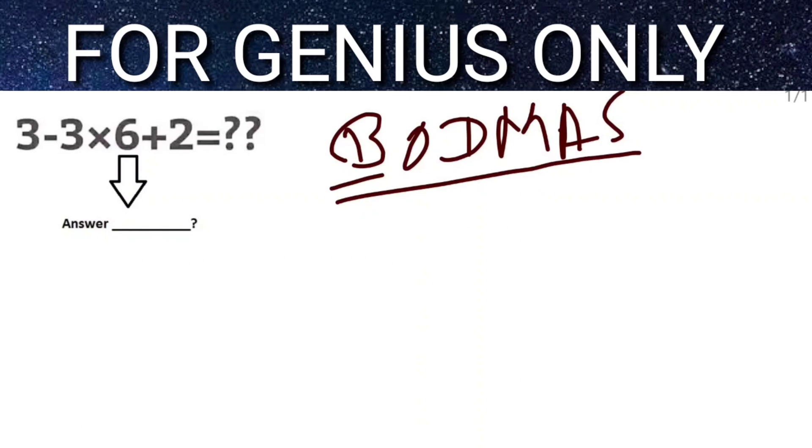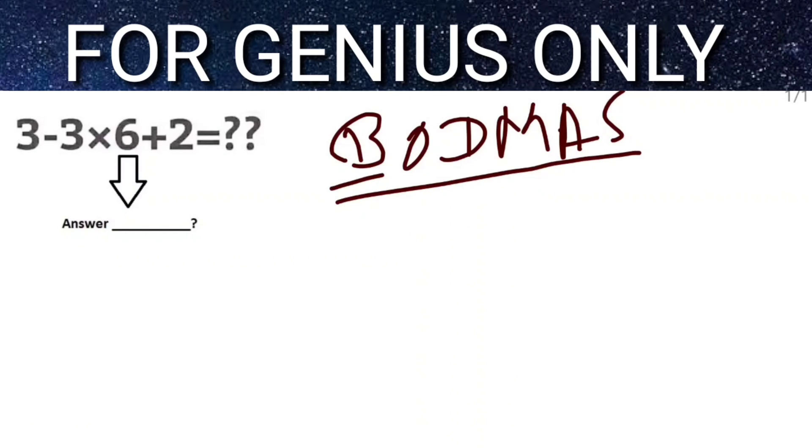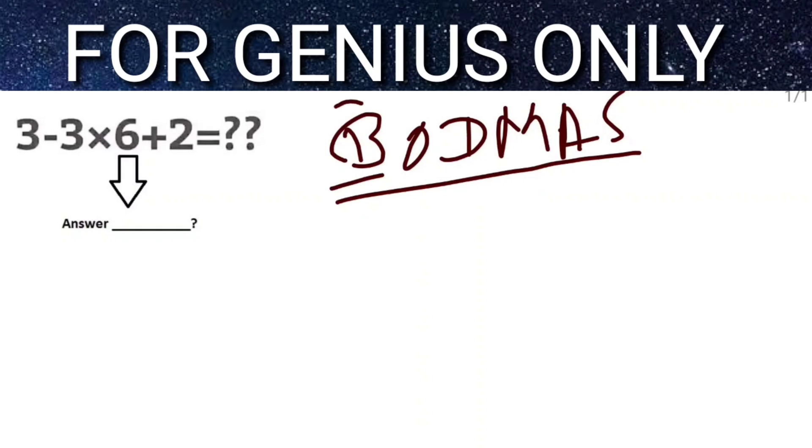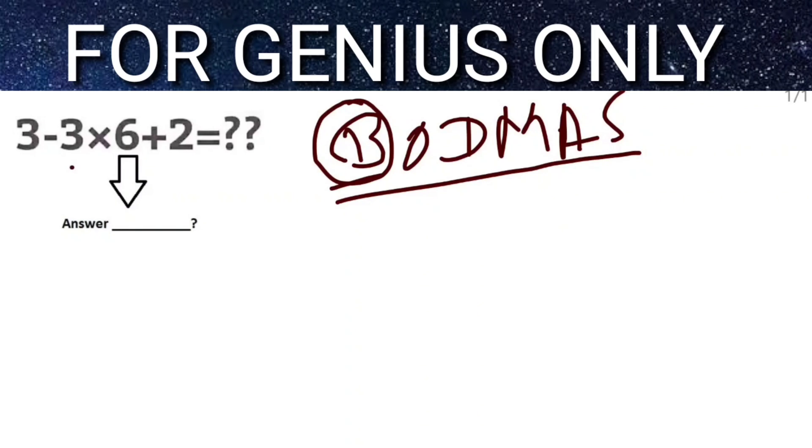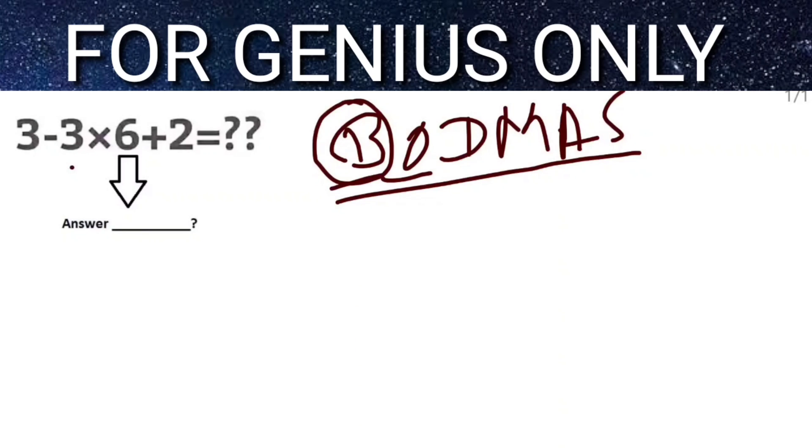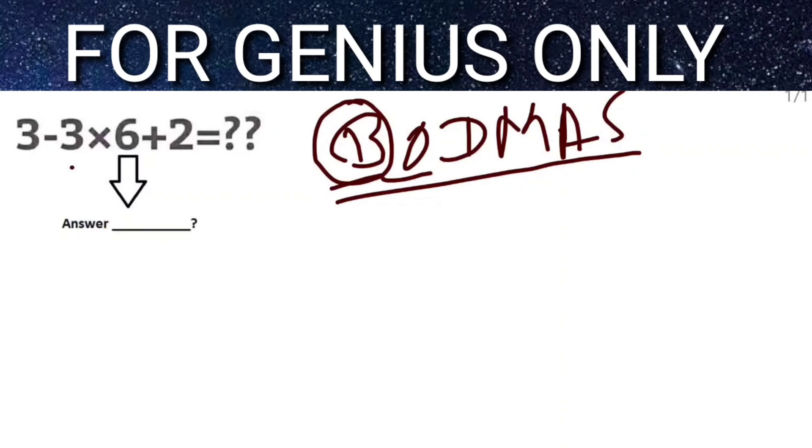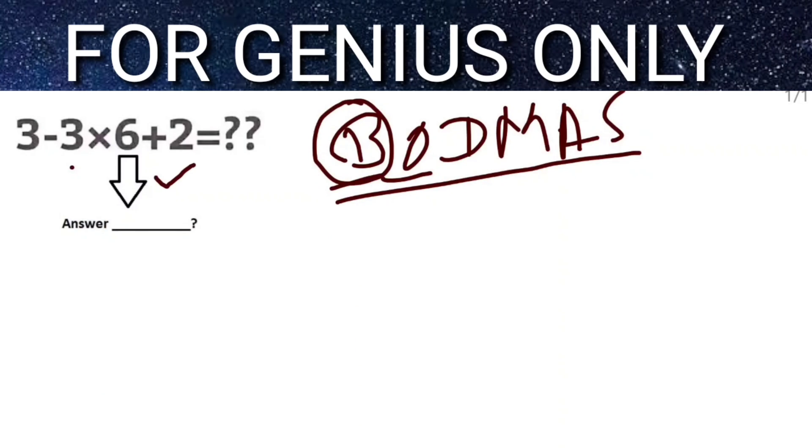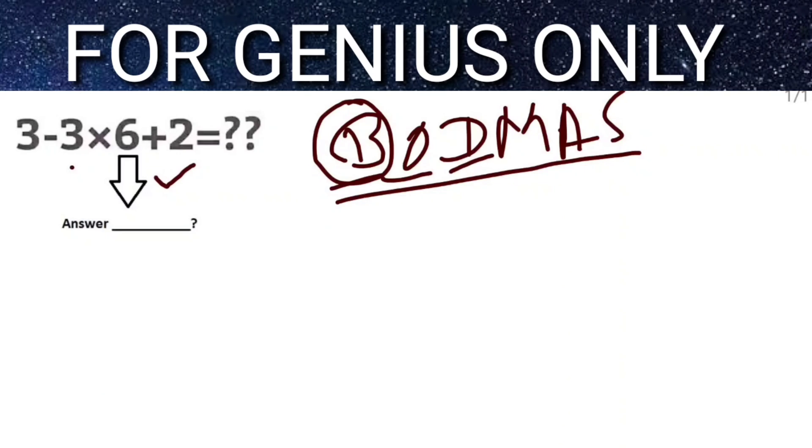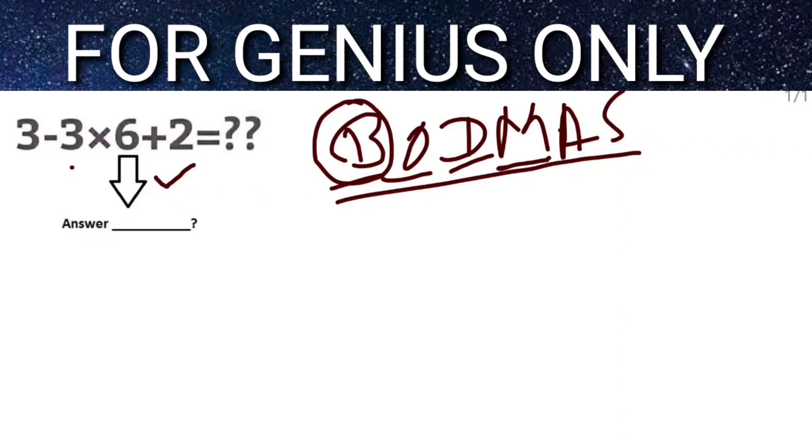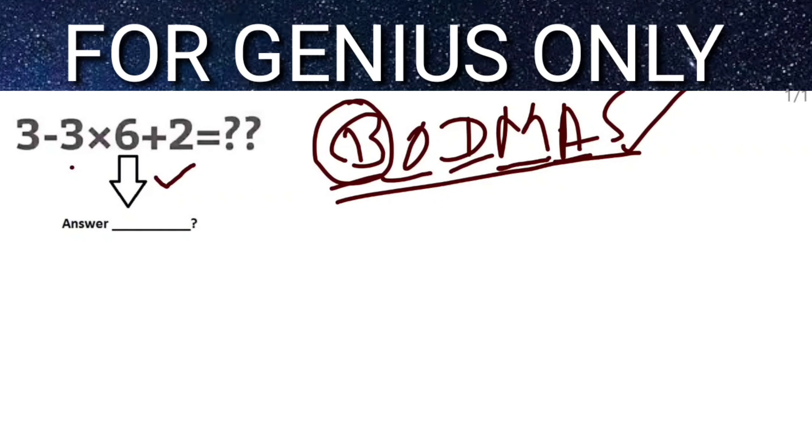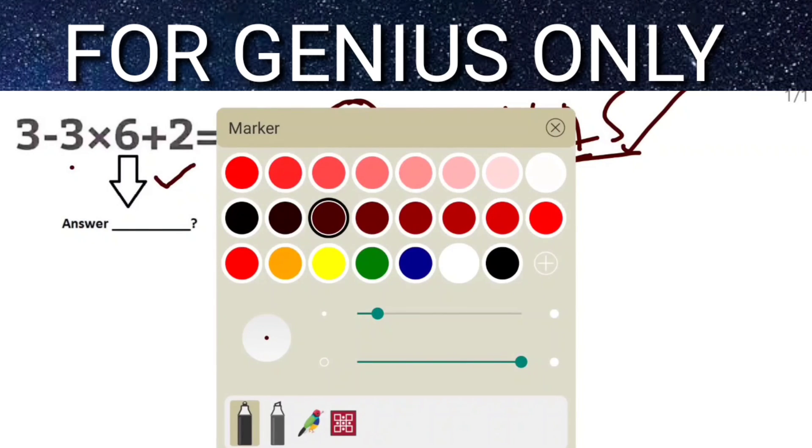Very first, when you're going to solve this kind of equation, you have to solve first if a bracket is available. After that, any exponents available in the equation, you have to solve that. And after that, divide and multiplication, and after addition, and last you have to subtract.